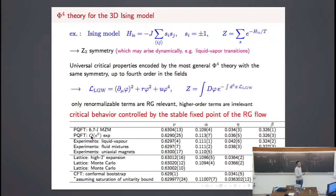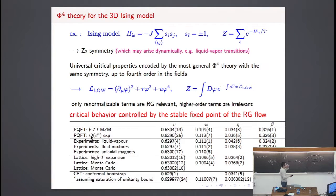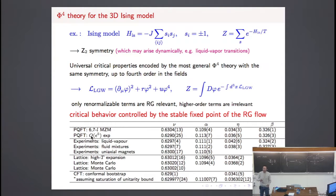Let me consider the Ising universality class, which is the simplest non-trivial universality class, in three dimensions. This universality class is characterized by Z2 symmetry, and we have the phi-to-the-fourth theory. Calculations for this theory have been done up to six or seven loops in the zero-momentum scheme I showed you before, and up to order epsilon-to-the-five — five loops — for the perturbative epsilon expansion.